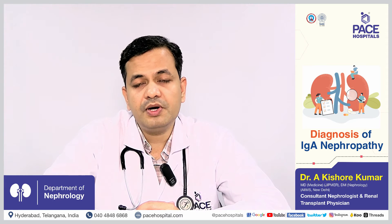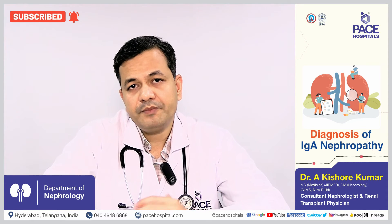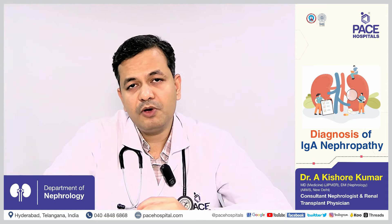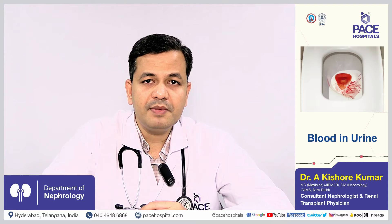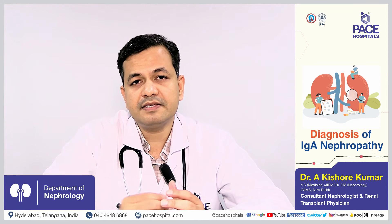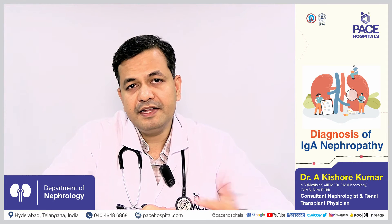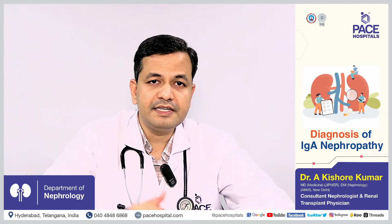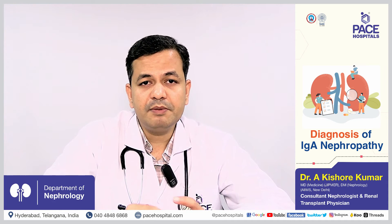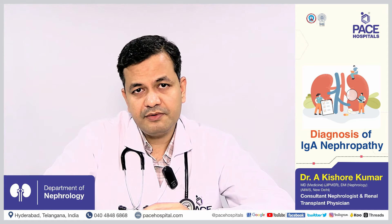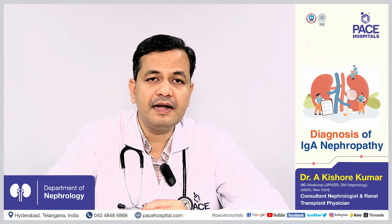As mentioned, most patients in early stages have no symptoms and come to the nephrologist due to lab abnormalities: protein or red blood cells in the urine, or high creatinine. Some patients develop frank nephrotic syndrome with excess protein loss leading to whole-body swelling. Some patients are first diagnosed only when they already have end-stage kidney disease, having suffered from IgA nephropathy for months or years undiagnosed, and ultimately landing in kidney failure.